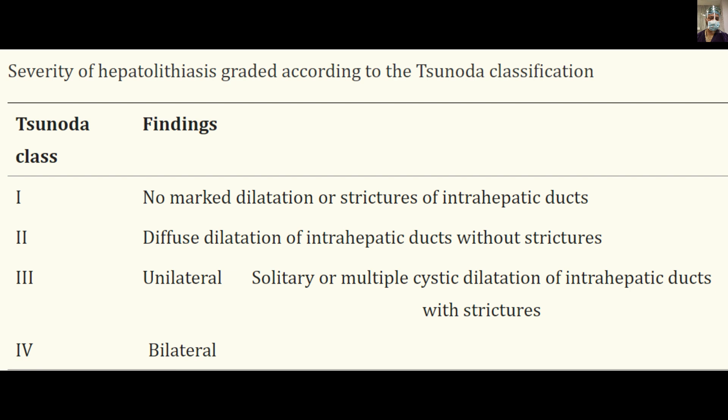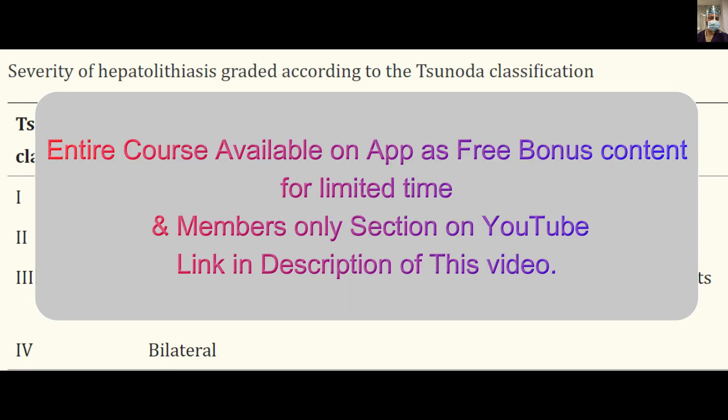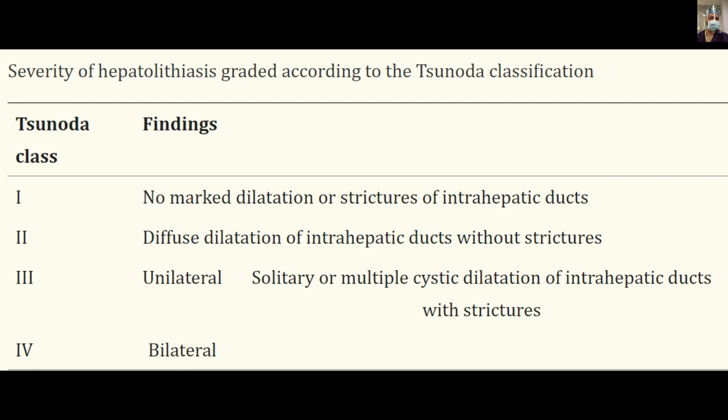Another important classification is the Sonoda classification. The existence of multiple classifications reflects that no single system explains everything. Sonoda Type 1: no dilatation. Type 2: diffuse dilatation of intra-hepatic ducts without stricture, with cystic dilatation. Type 3: unilateral solitary or multiple cystic dilatation of intra-hepatic ducts with strictures. Type 4: bilateral stricture formation, solitary or multiple. Management changes accordingly — if there is no stricture, simple drainage may suffice; if stricture is present, resection with drainage may be needed.